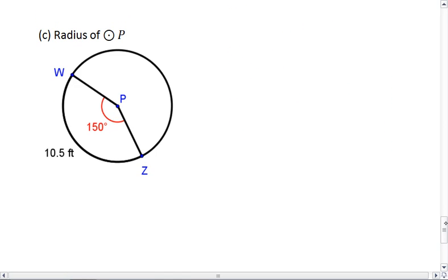And then lastly, I want to find the radius of P. To find this, I actually need to do two steps here. I need to find the circumference first. So I'm going to say I have 150 degrees out of a total 360. This equals an arc length of 10.5 feet over the circumference. Cross multiply, I get 150C equals 360 times 10.5, which is 3780. To solve for C, I divide both sides by 150. I get C equals 25.2 feet.